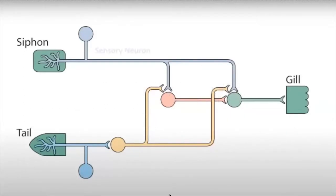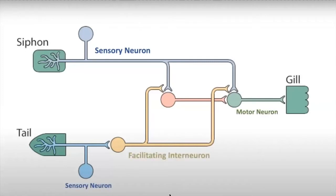In a simple circuit in Aplysia, there are sensory neurons, motor neurons, and interneurons.